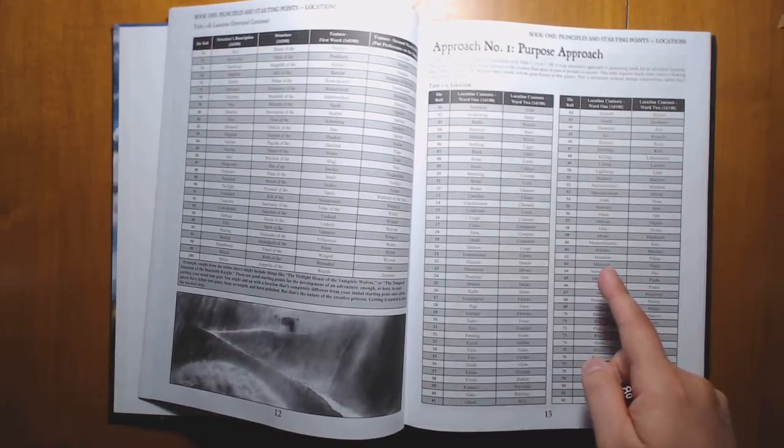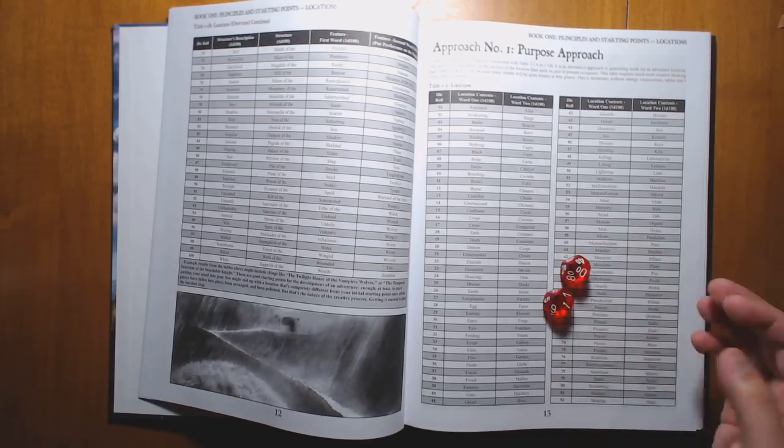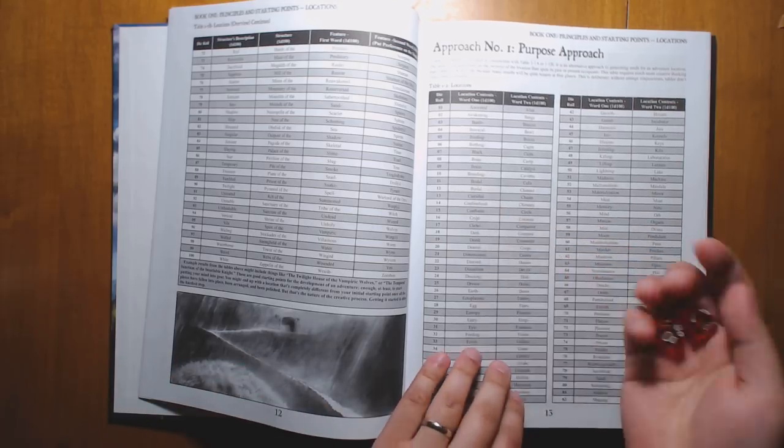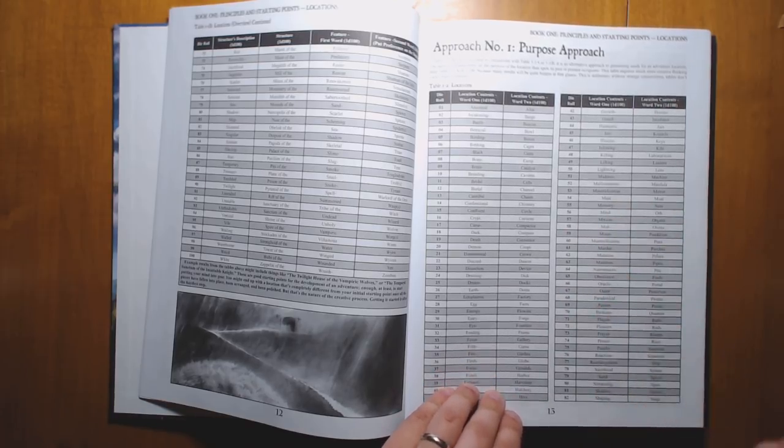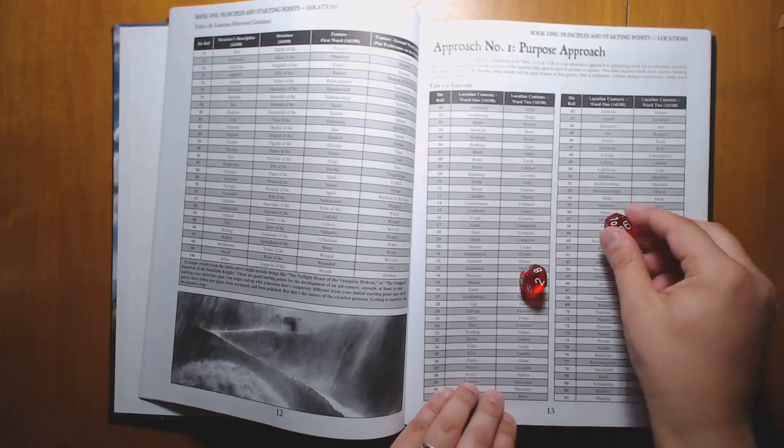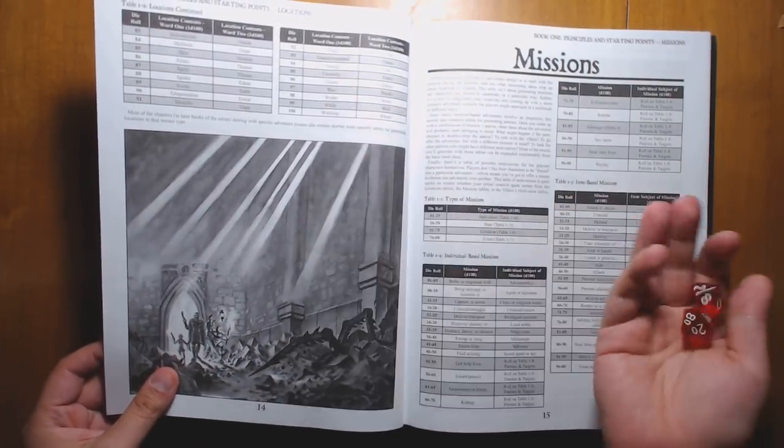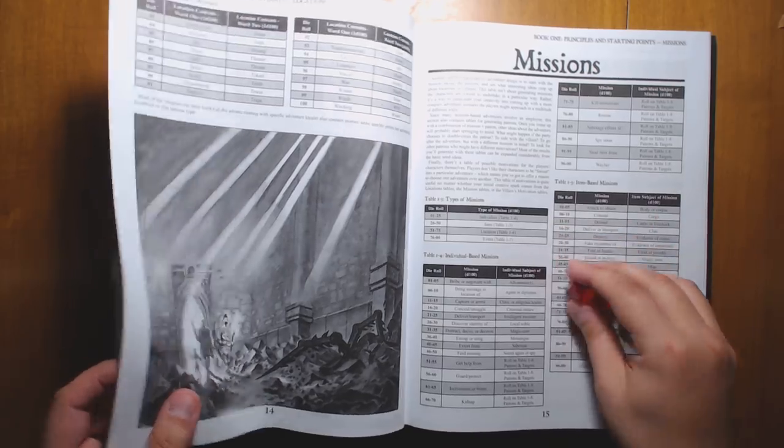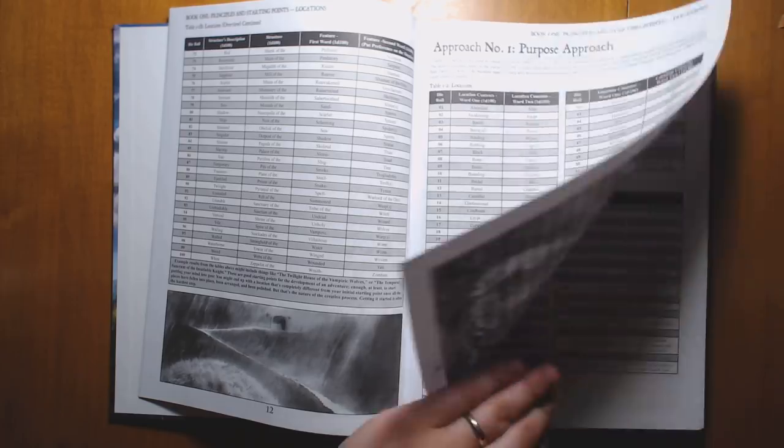And we also have another way to get adventure locations here. Or we can go with a purpose approach where you have the sort of central idea around the adventure. The Breeding Preserver. That sounds horrible. Or the Time Caverns.